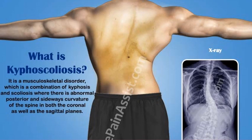Kyphoscoliosis is a combination of kyphosis and scoliosis. Scoliosis involves a sideways abnormal curvature of the spine, while kyphosis involves abnormal curvature on the posterior aspect. Together, this combination can also lead to concerns about lung expansion.